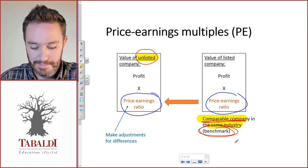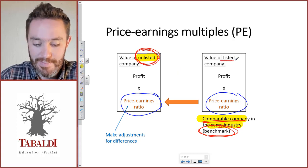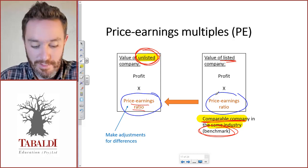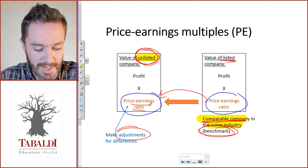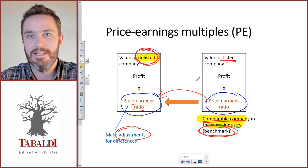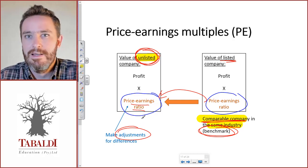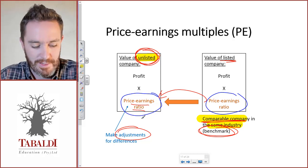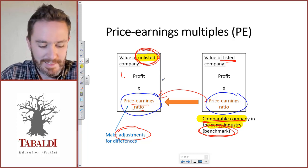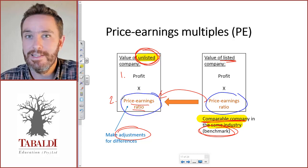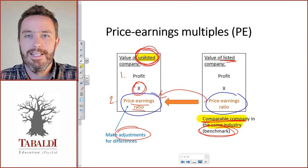There will always be differences between our unlisted company and the larger listed benchmark company, so the borrowed price earnings ratio will have to be adjusted for any differences — higher risk, difference in size, the fact that it's not listed, and other factors. These are subjective, judgmental adjustments to the PE ratio, which we'll look at in more detail in future lectures. The first step is determining the profit to use; the second is finding the PE ratio and making adjustments. Then it's simply a matter of multiplying the two to get the value of equity of the unlisted company — that is the price earnings valuation.